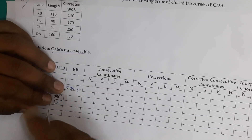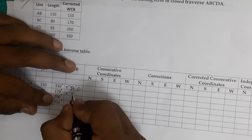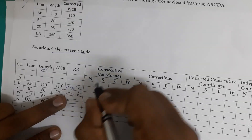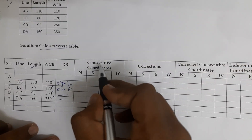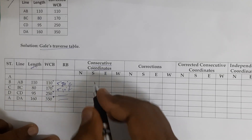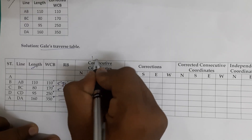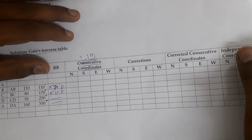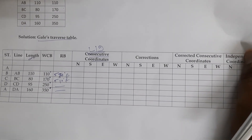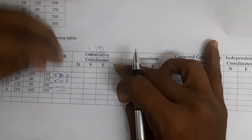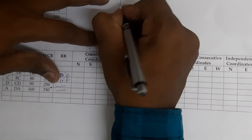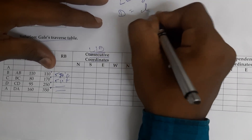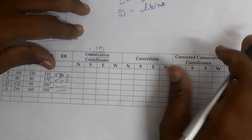The reduced bearings for the other lines can be calculated similarly. After finding the reduced bearings, we need to calculate the consecutive coordinates — that is, the latitude and the departure. North-South is called the latitude, and East-West is called the departure. The formulas are: Latitude = L cos θ, and Departure = L sin θ.